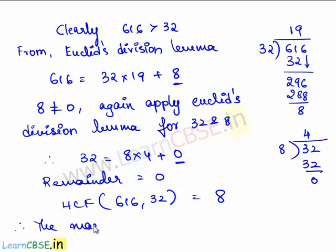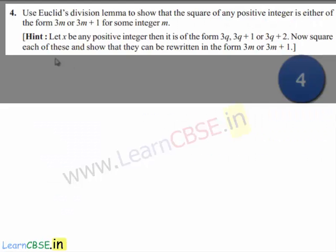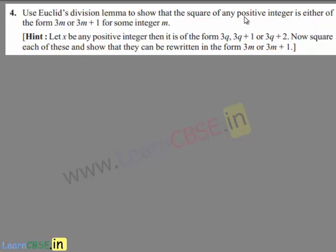Therefore, the maximum number of columns in which both groups can march is 8. Now let us move on to the fourth question: use Euclid's division lemma to show that the square of any positive integer is either of the form 3m or 3m plus 1 for some integer m. The hint given is: let x be any positive integer, then it is of the form 3q, 3q plus 1, or 3q plus 2. Square each of these and show that they can be written in the form 3m or 3m plus 1.